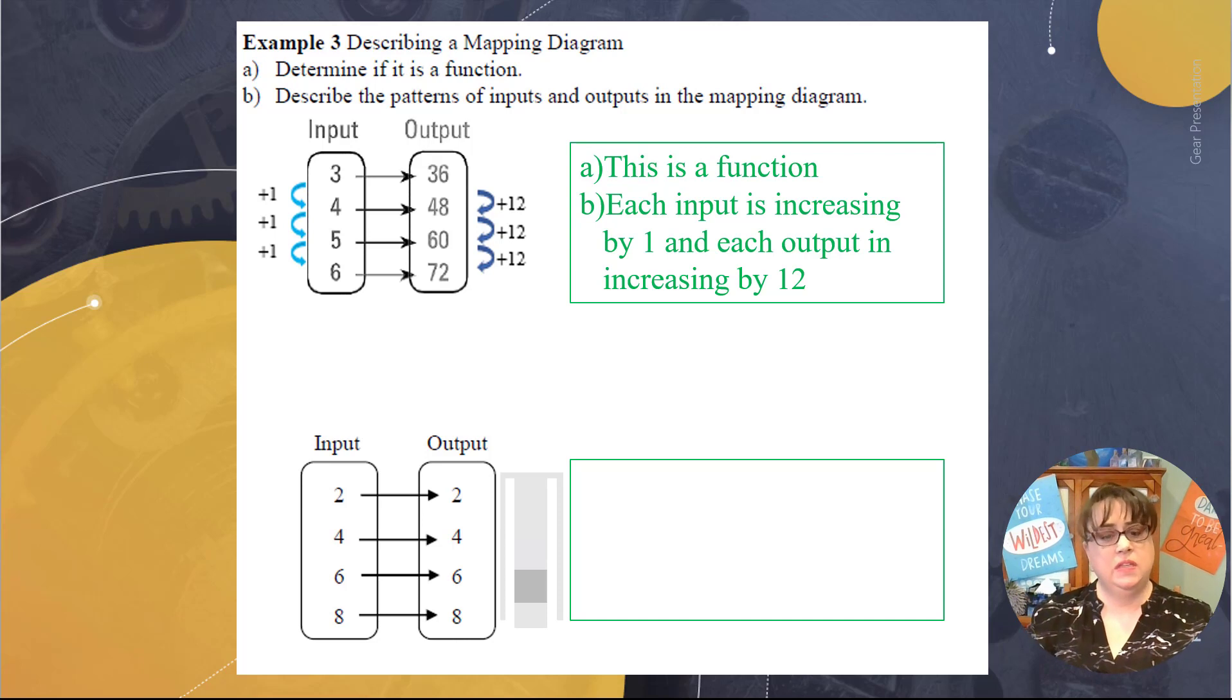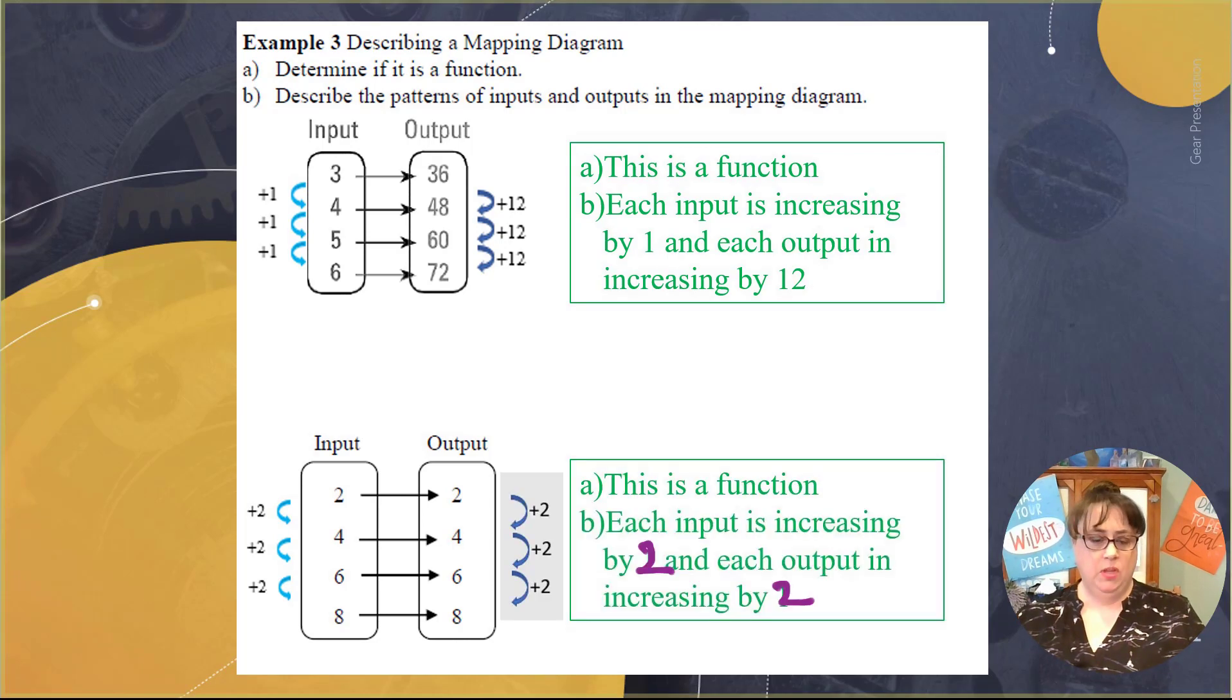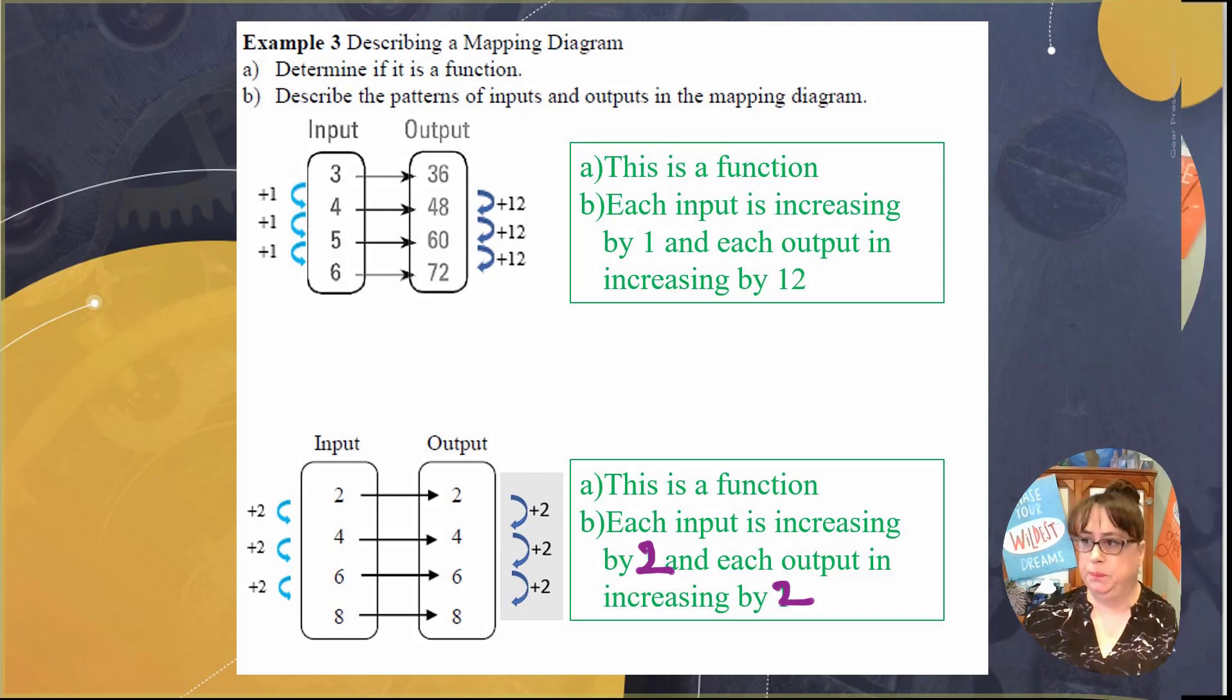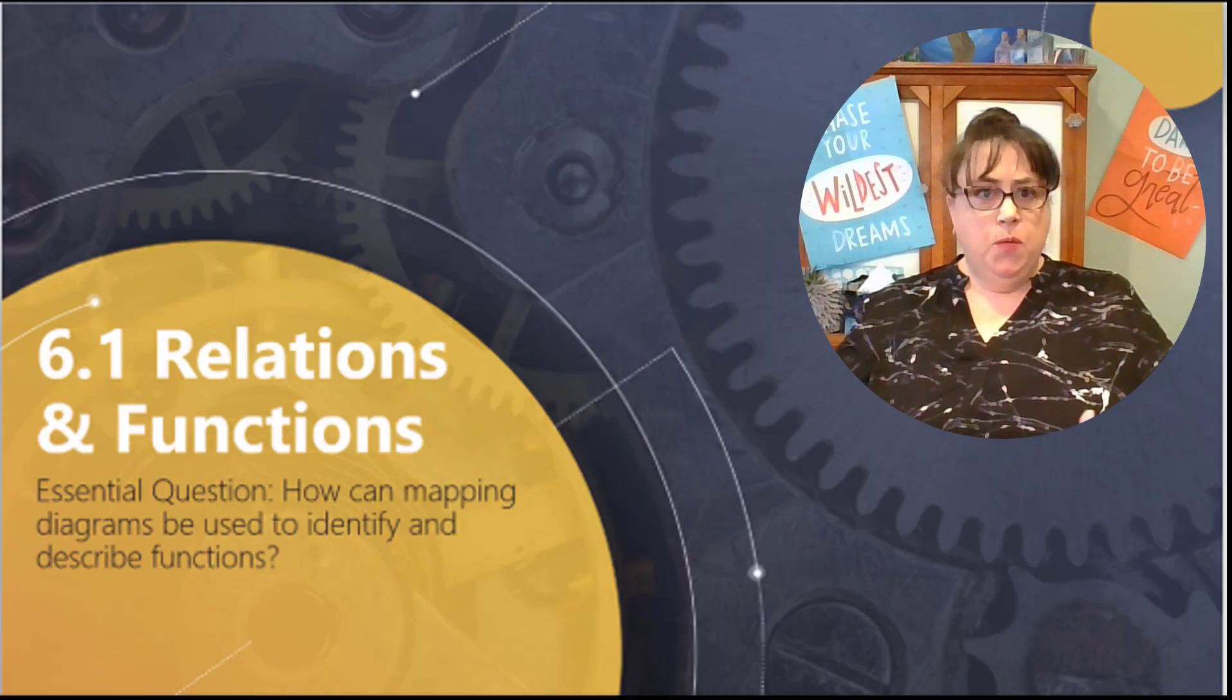So now let's look at the second one. Each input has only one output. That's good news. So talk about your inputs. How are they each increasing? They're each increasing by two, and each of your outputs are also increasing by two. So it's just a matter of looking what's happening on each. They could have also been decreasing. That happens sometimes too.